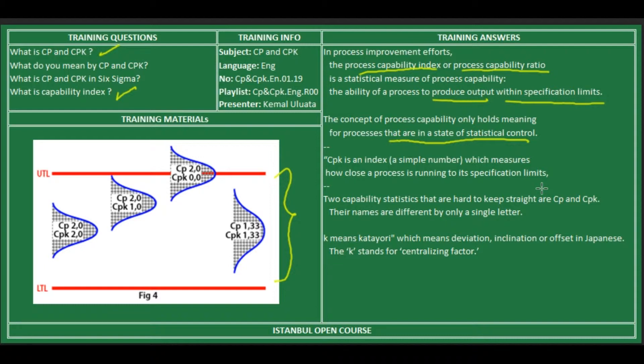There are two capability statistics and their names differ by only a single letter, the K. K means category, which means deviation or inclination in Japanese, and this K stands for centralizing factor.